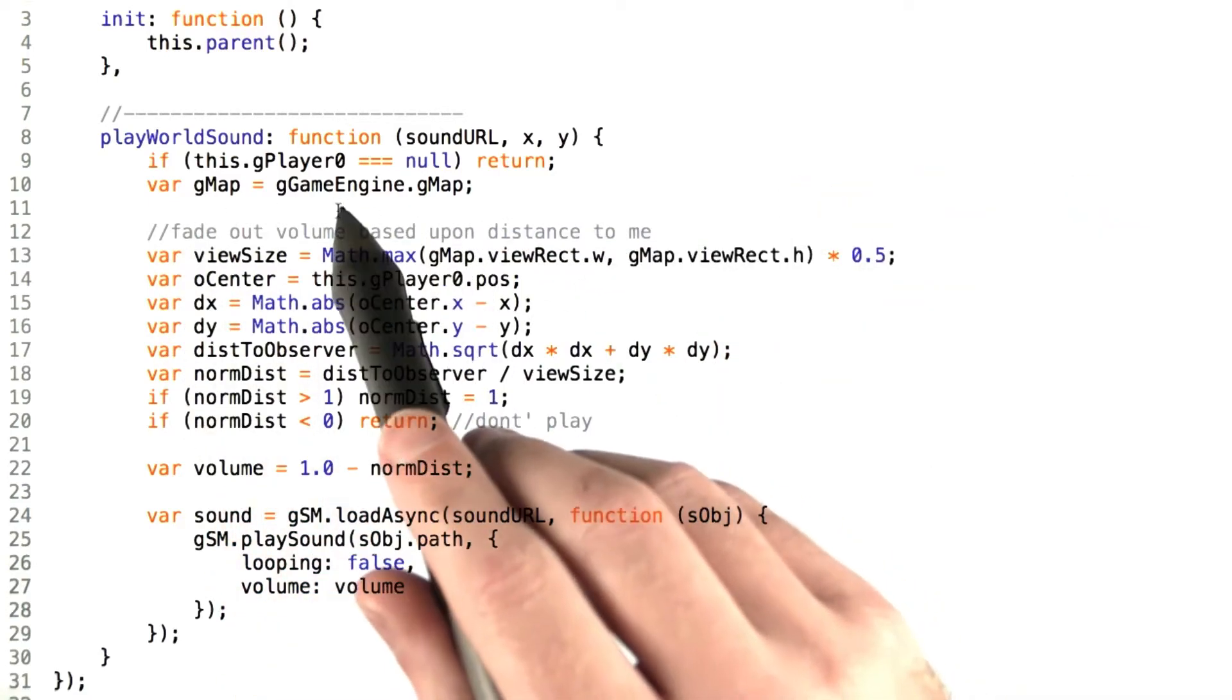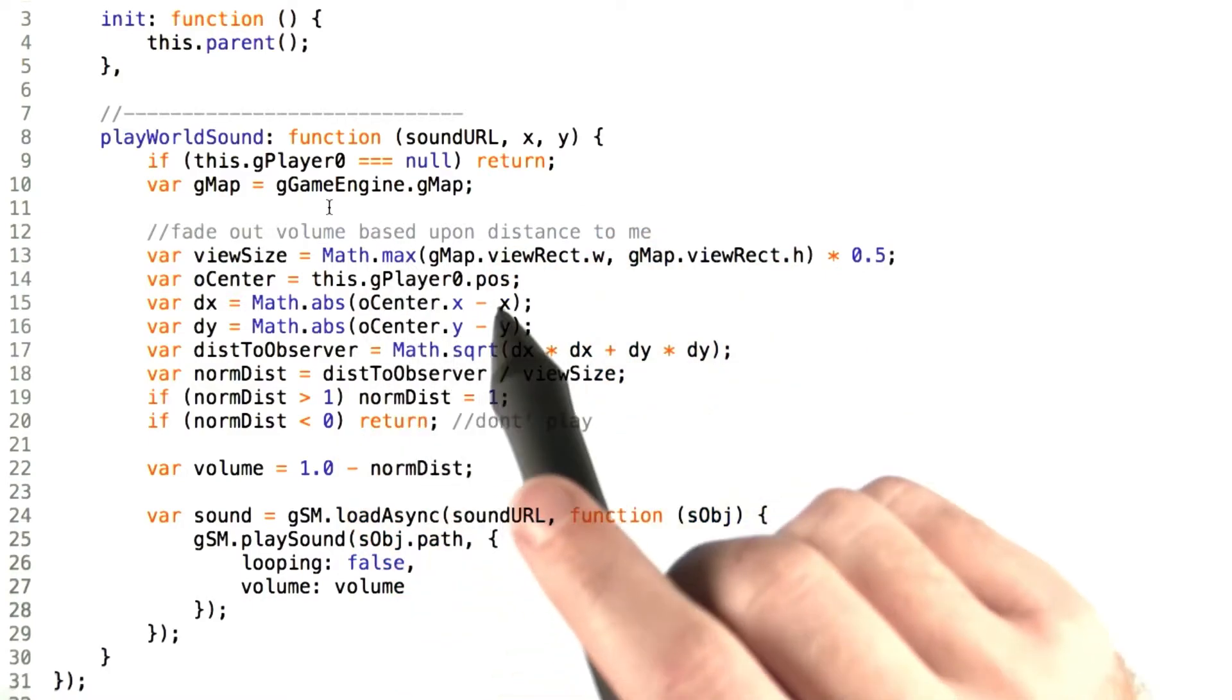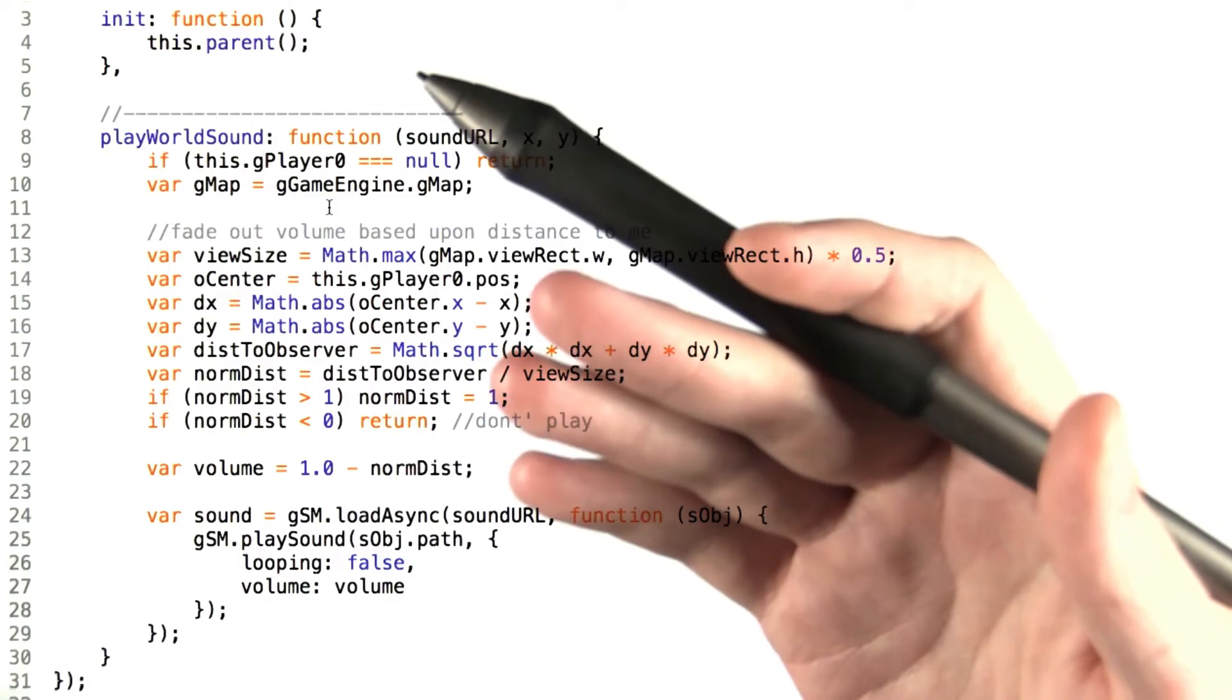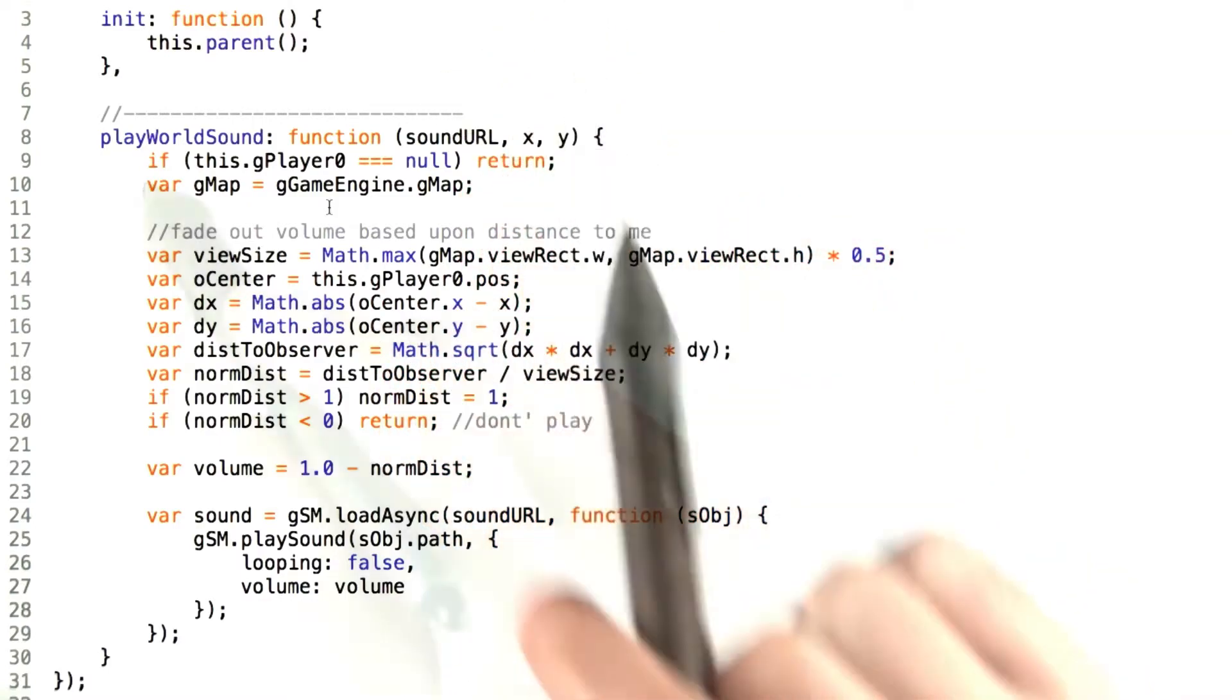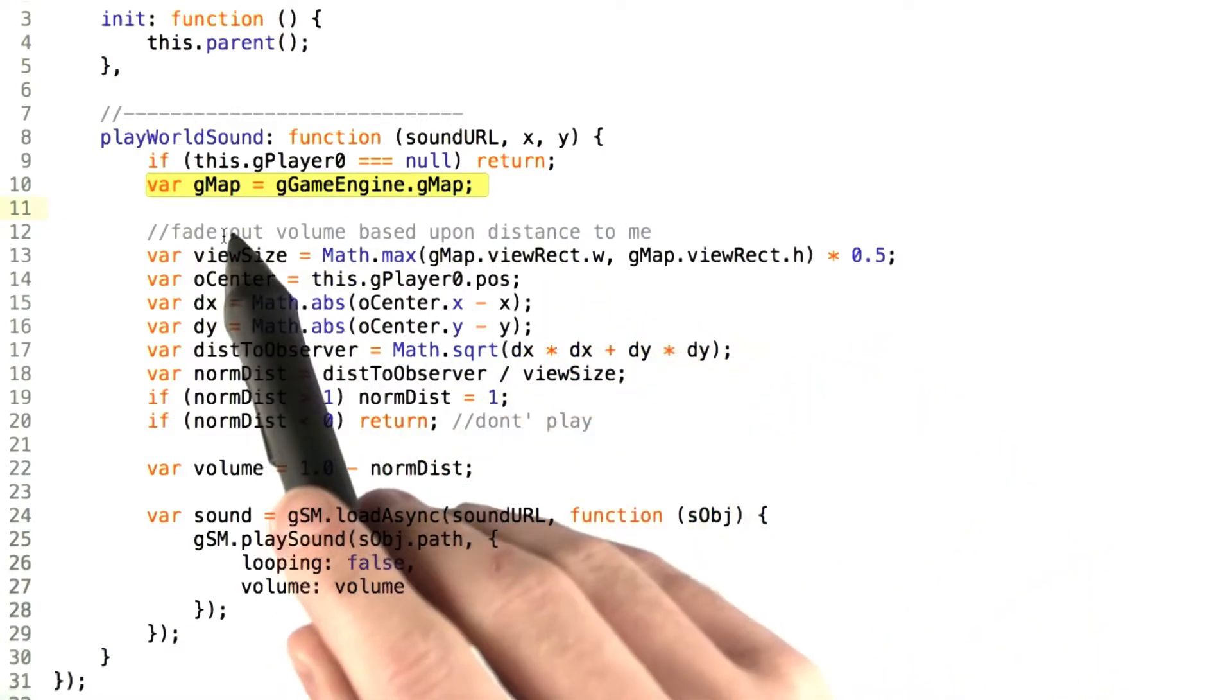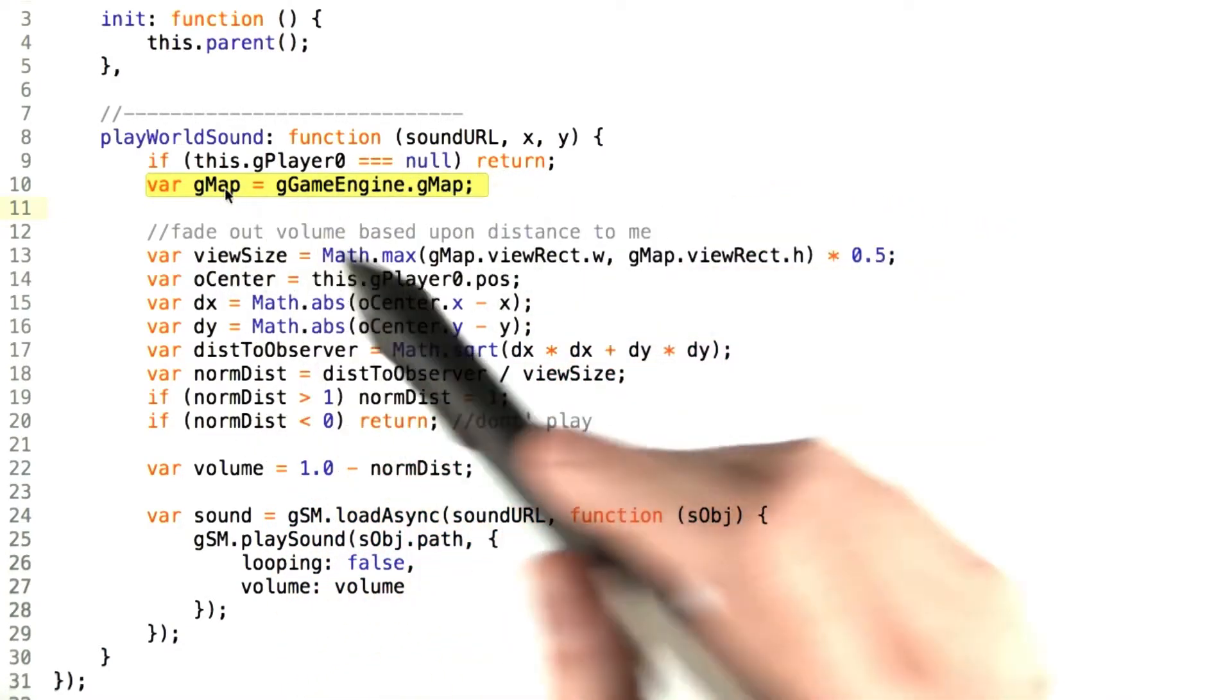First we check if the player is null for some reason, just as a sanity check. If it is, then we simply return and don't play it. If there's no players to hear the sound, does the sound actually play? Then we do a little bit of shorthand here to make it easier by shortening gameEngine.gMap to just gMap locally.